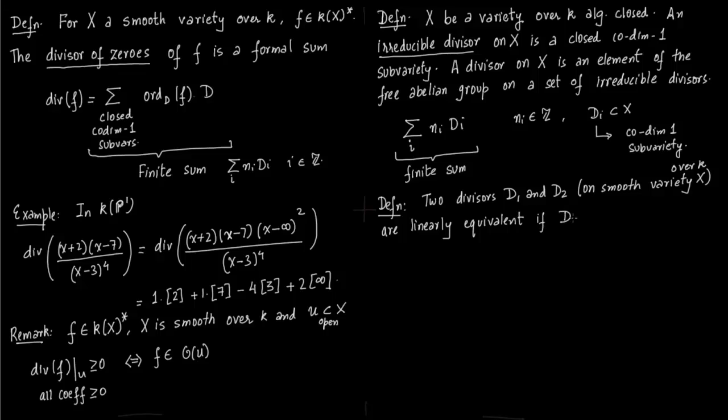So we can subtract one from another. Now if you subtract them and they are equal to some divisor of f where f is the element of k(X)*, then you call D_1 and D_2 as linearly equivalent.